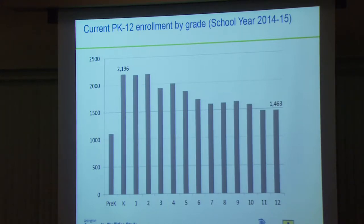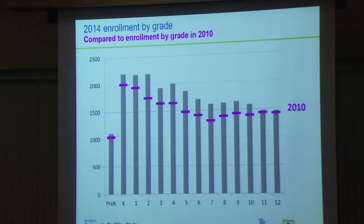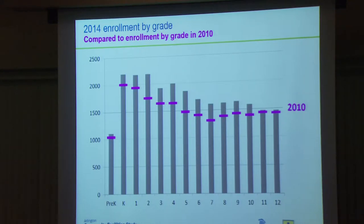Another interesting thing to note: looking at kindergarten, first, and second grade, those cohorts are all relatively large. But look at 9th, 10th, 11th, and 12th — the differences are stark. In terms of natural increase over time, you can see what's coming. Here's a chart of 2014 enrollment by grade compared to 2010 — the purple line shows 2010 enrollment, and the top shows where we are today, giving a frame of reference for how much we've grown.